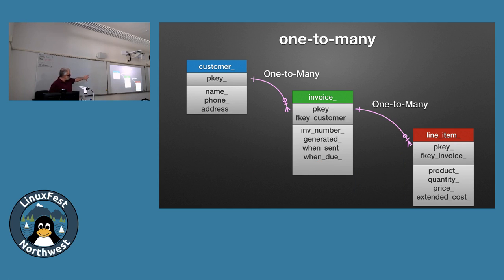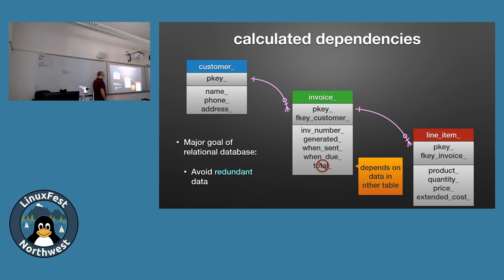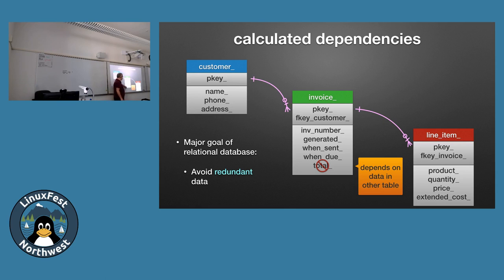Looking at this version, you might instinctively want to put a total on the invoice since you see one at the bottom of a document. But relationally, that's wrong — you now have data that also exists in the line items table. You've duplicated your data. If computers were theoretically infinitely fast, you'd just find all line items, grab the extended costs, and add them up dynamically. The major goal of the relational database is to avoid redundant data — all the normalization rules come down to redundancy. You shouldn't have multiple copies of your data floating around.